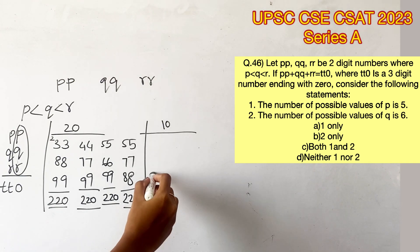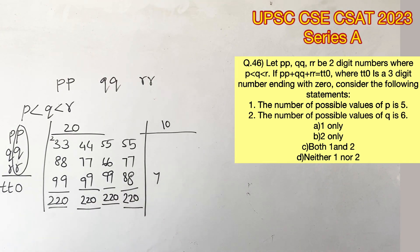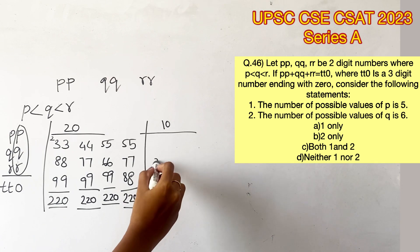7 in the place of R will be possible because Q will take the value 2 and P will take the value 1.